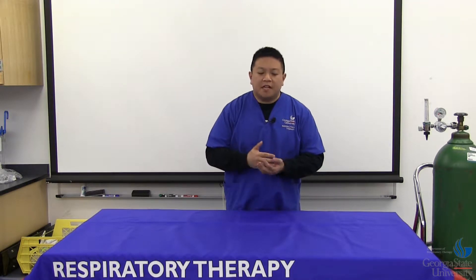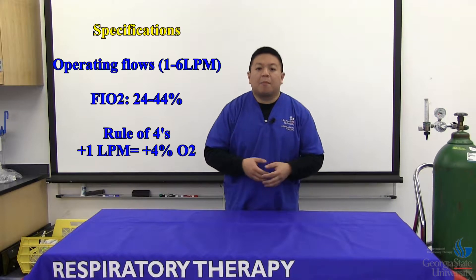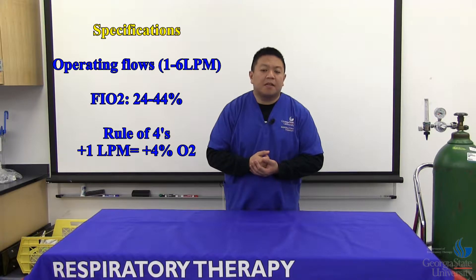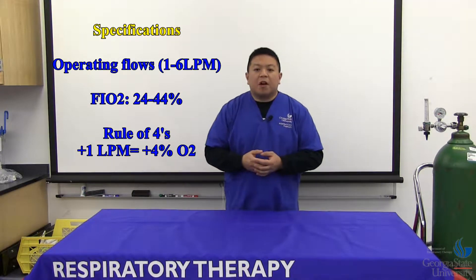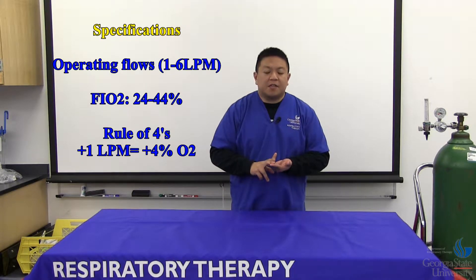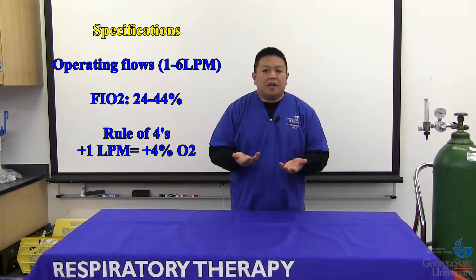Just a reminder for nasal cannula specs: operation parameters are one to six liters per minute on the flow meter. It delivers anywhere from 24 to 44% FiO2 on your standard oxygen source — tank, wall, all across the board.